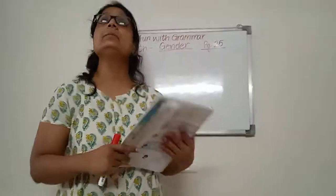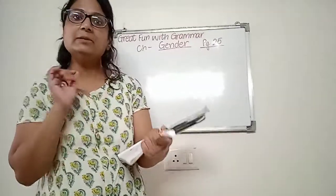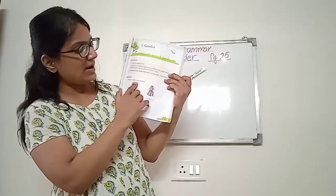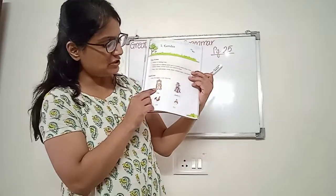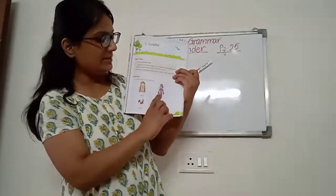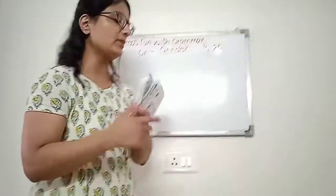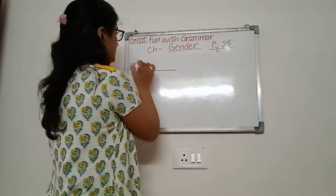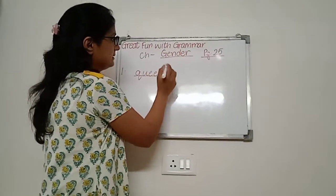Now again, here in this chapter, with the beginning of the exercise, the first exercise is write the names of the following. Very simple. See, it is a picture of a king. So, king is written here. Now, it is a picture of a queen, right? So, you can write in the blank. In the blank, you can write queen.